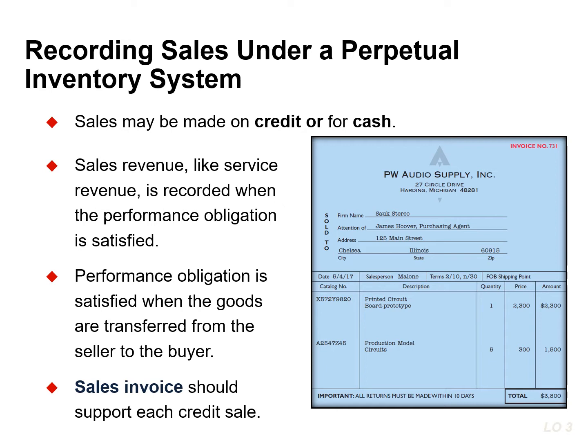The original copy of the invoice goes to the customer, which is the purchase invoice, and the seller keeps a copy for use in recording the sale. The invoice shows the date of sale, customer name, total sales price, as well as other relevant information.